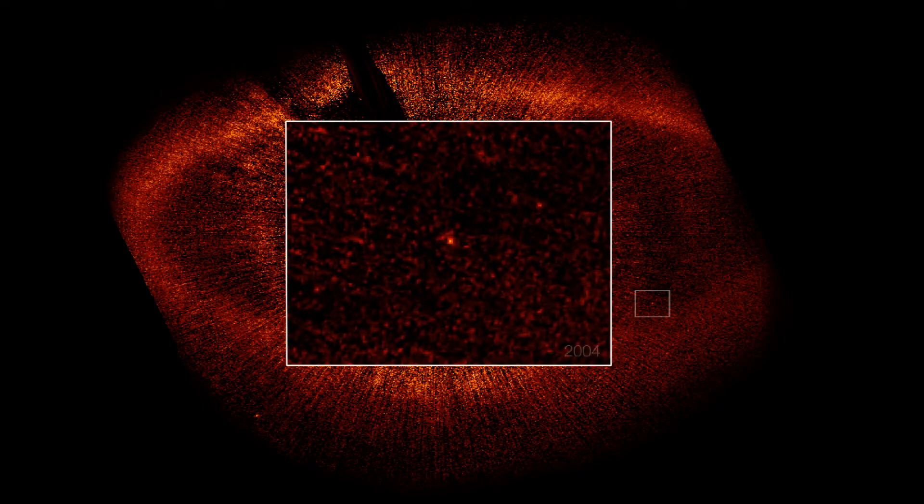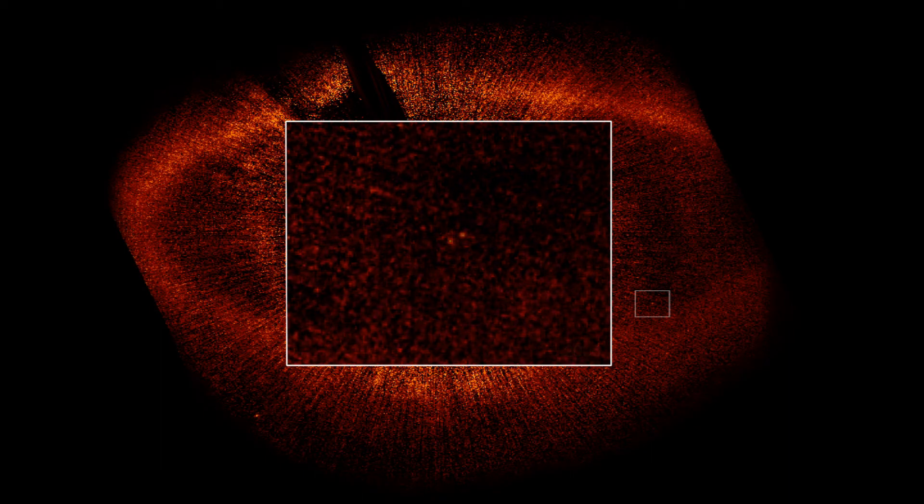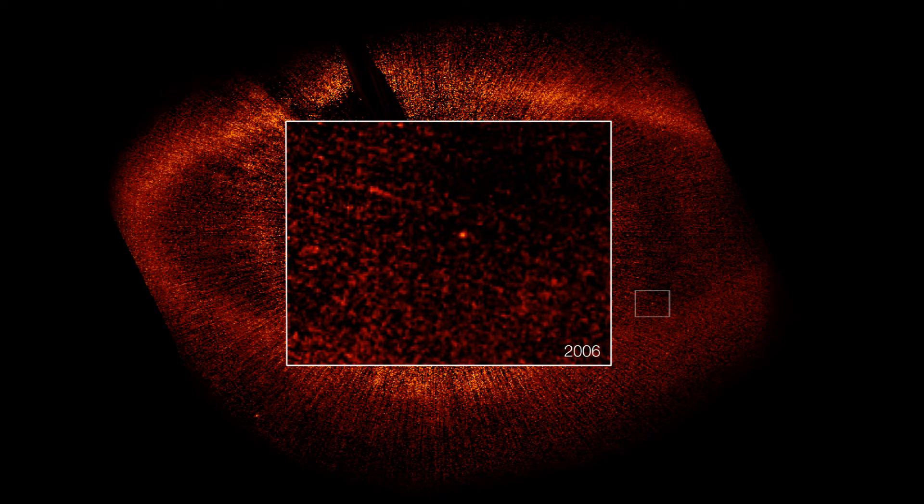Amazingly, Hubble has managed to take a snapshot of this planet not just once, but twice, with almost two years in between. Being able to actually see the same dot of light moving around the central star is a very clear sign that this object really is in orbit, and that it's not just something that happens to lie along the line of sight. Astronomers have calculated that it takes this planet about 872 Earth years to complete one orbit.